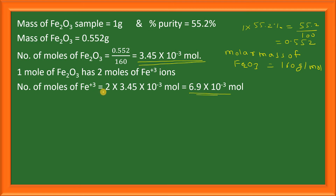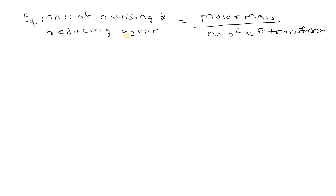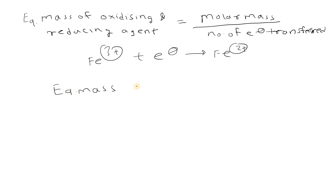This solution is heated in the presence of zinc to reduce the oxidation state of Fe³⁺ to Fe²⁺. Zinc dust reduces Fe³⁺ to Fe²⁺ and the number of electron transferred is one. The equivalent mass of oxidizing and reducing agent equals molar mass divided by number of electrons transferred. Since electrons transferred is one, equivalent mass equals molar mass.